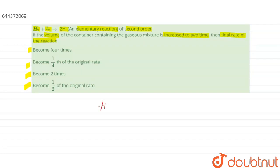So we know that H2 plus I2 gives 2HI. This is our reaction and the order of reaction is given as 2.